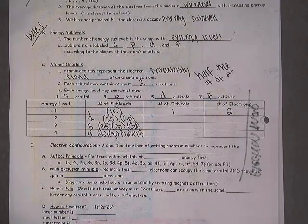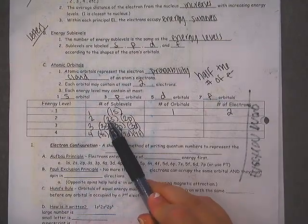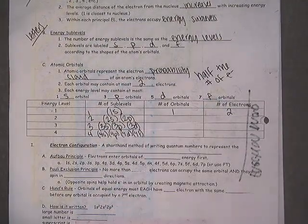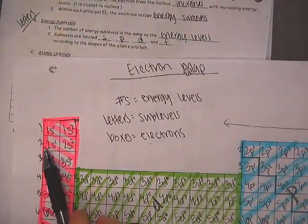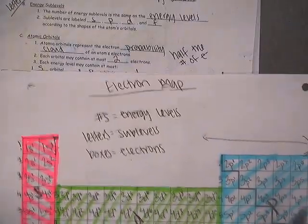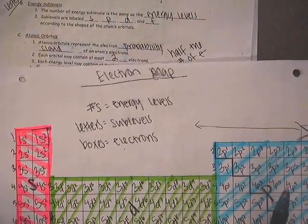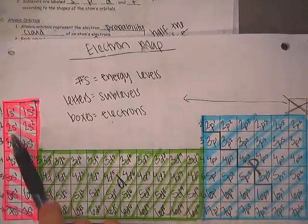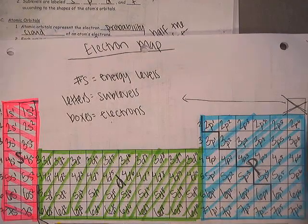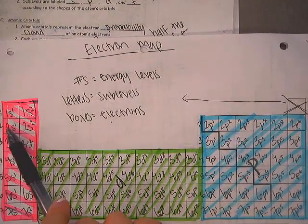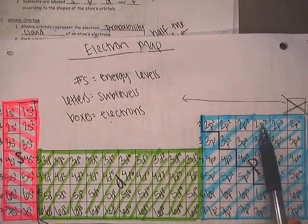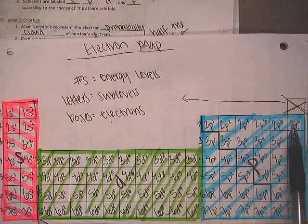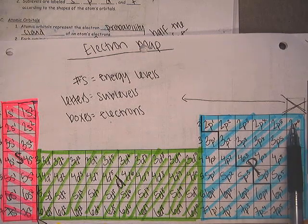In energy level 2, we're looking at 2S and 2P. That's a total of 2 plus 6 — 8 electrons in the second energy level.